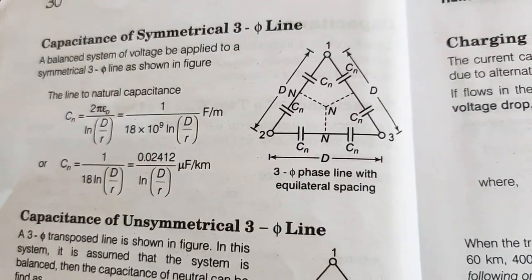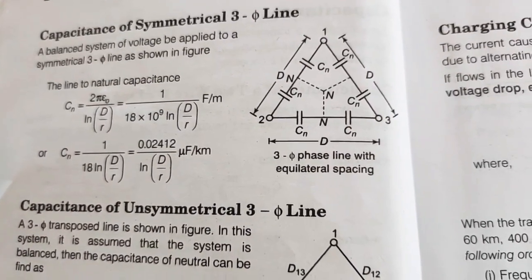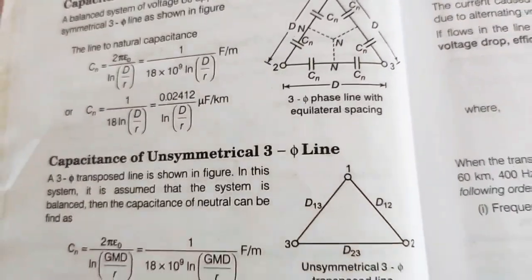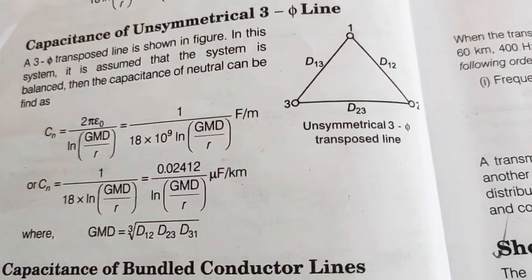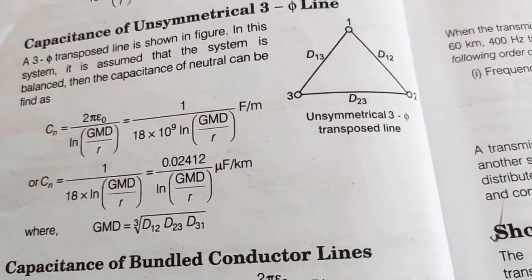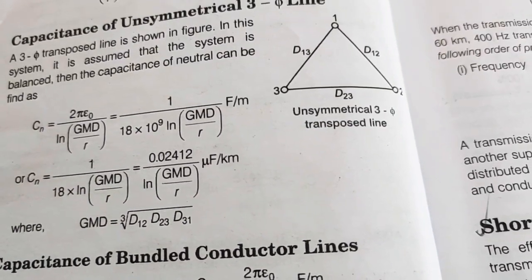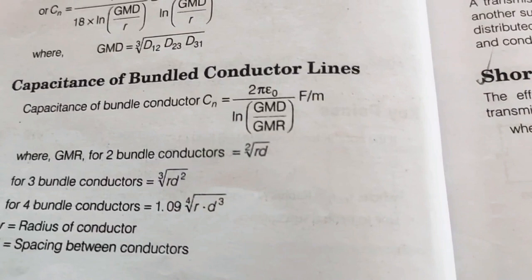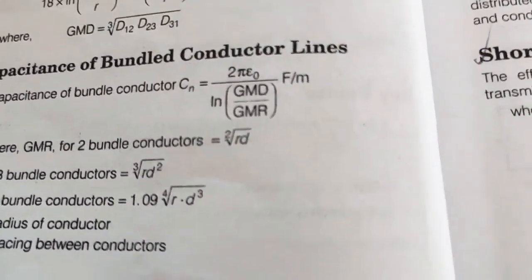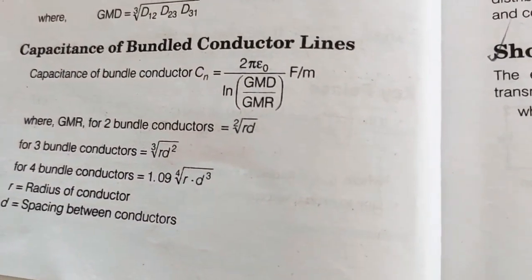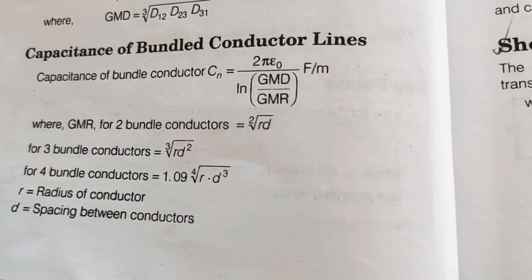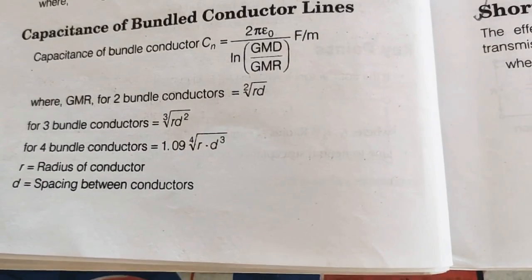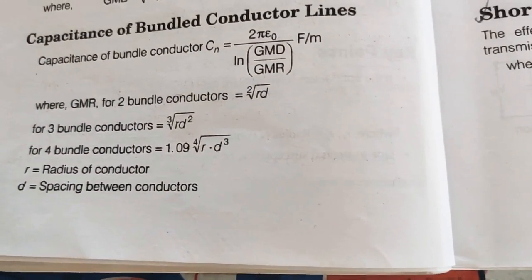Capacitance of a symmetrical three-phase line: Cn equals 0.02412 divided by ln(D/r) microfarads per kilometer. For an unsymmetrical three-phase line, GMD equals the cube root of D12·D23·D31, and Cn equals 0.02412 divided by ln(GMD/r) microfarads per kilometer. Capacitance of a bundled conductor: Cn equals 2 pi epsilon-naught divided by ln(GMD/GMR) Farads per meter, where GMR for two bundled conductors is the square root of r·d, for three conductors is the cube root of r·d-squared, and for four conductors is 1.09 times the fourth root of r·d-cubed.